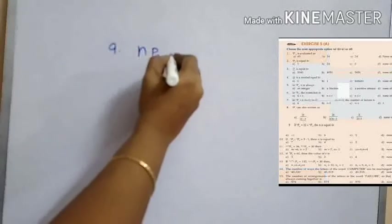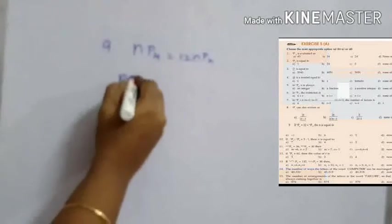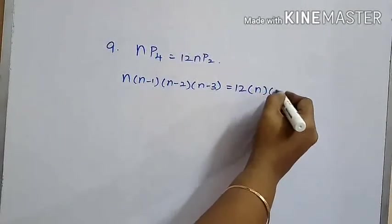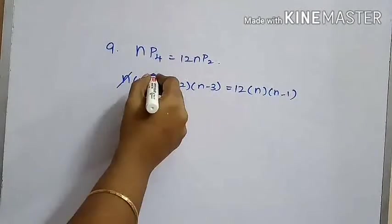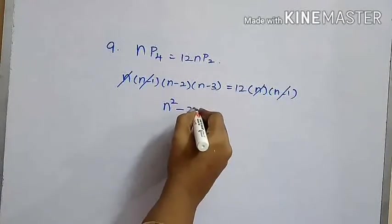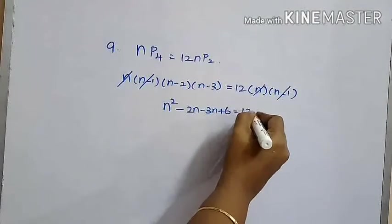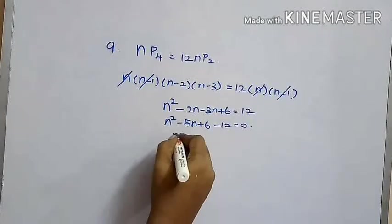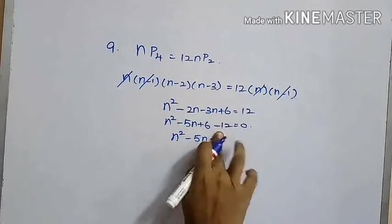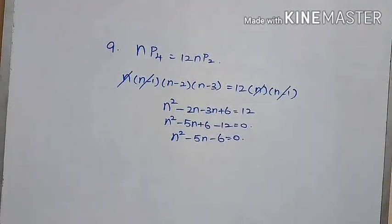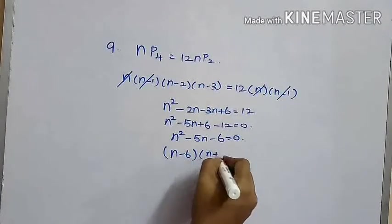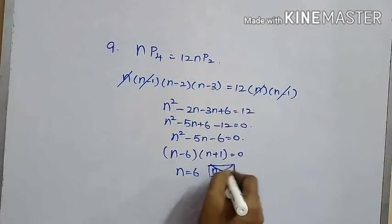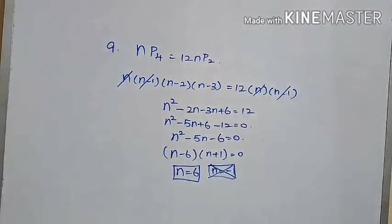Ninth question: If NPR equals a given value, we write it as N(N−1)(N−2)(N−3) = N(N−1). Cancelling common terms on both sides, we get N² − 2N − 3N + 6 = 12, which simplifies to N² − 5N − 6 = 0. Splitting into factors gives (N−6)(N+1) = 0, so N = 6 or N = −1. We reject N = −1 since N cannot be negative, so N = 6.